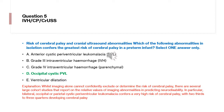We cannot say with certainty that a patient will develop CP based on this ultrasound finding alone, but large cohort studies show that neurodisability is increased particularly with bilateral occipital or parietal cystic PVL. If it is occipital or parietal cystic PVL, there is a very high risk of CP, with two-thirds to three-quarters of affected infants developing CP. That was the last question — see you in the next video.